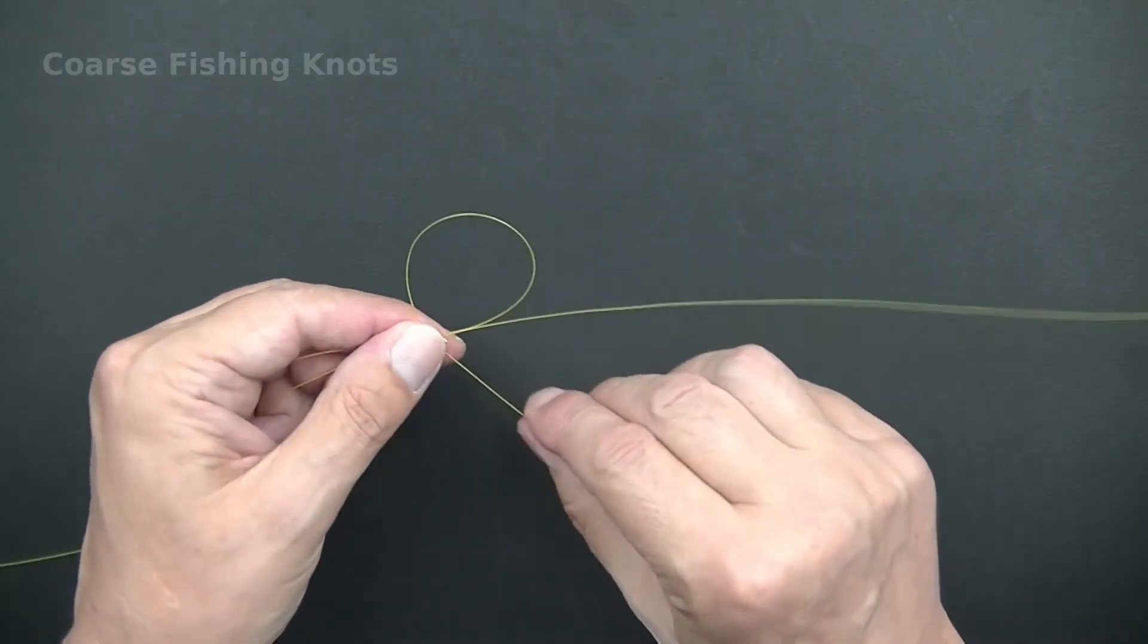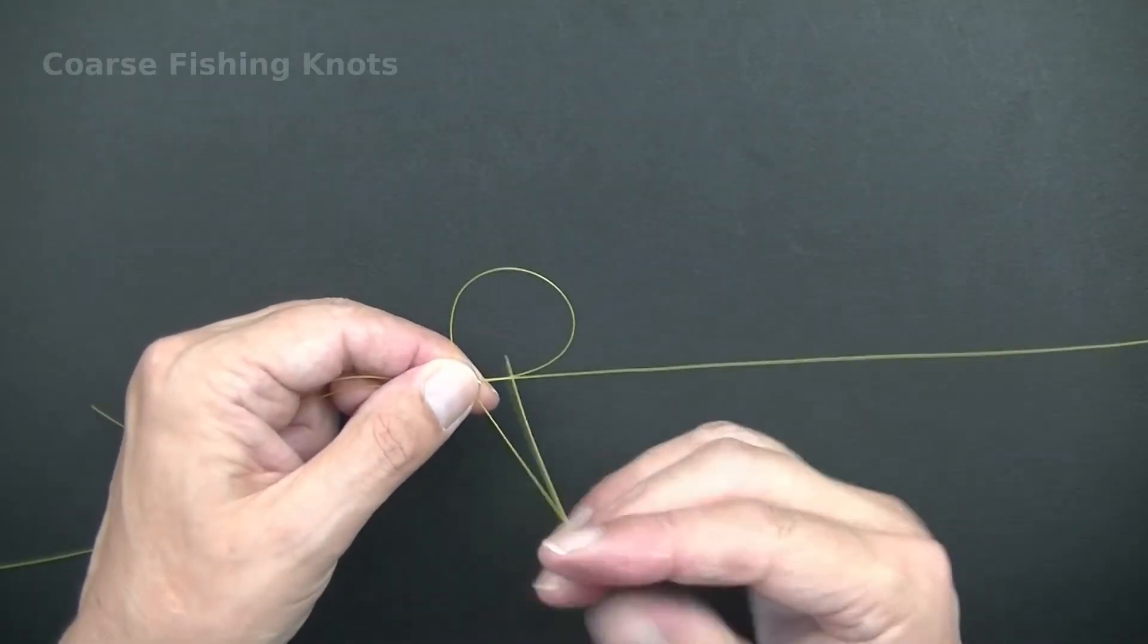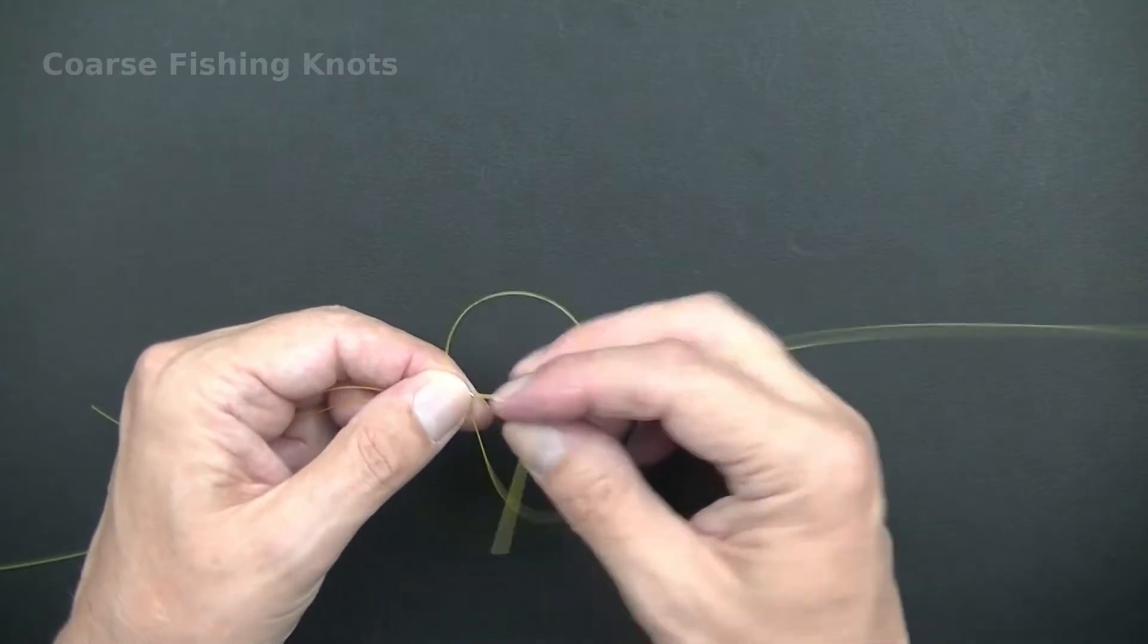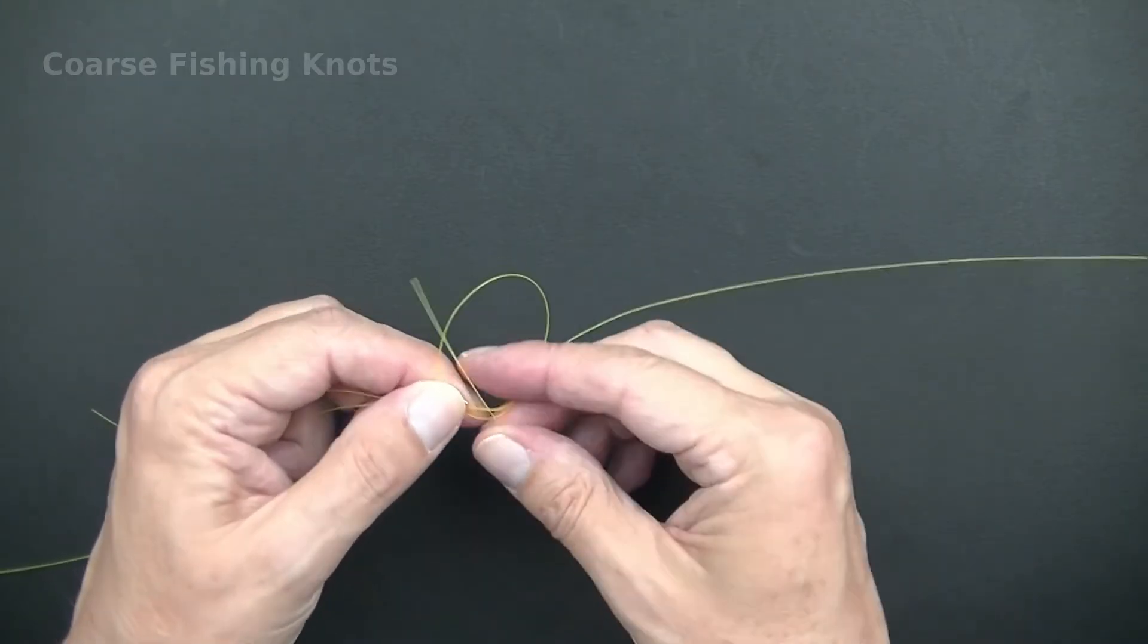Create a loop in the off cut. Pass the tail end through the loop 4-6 times.